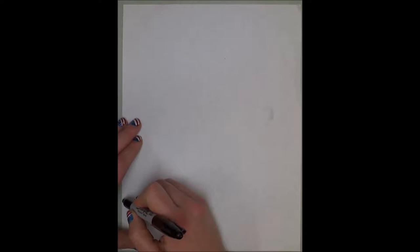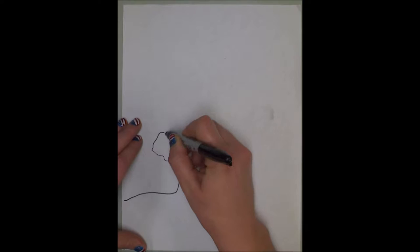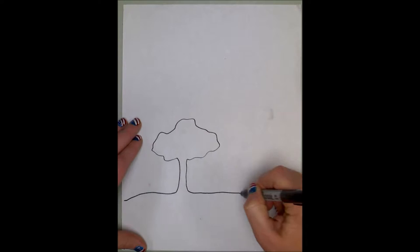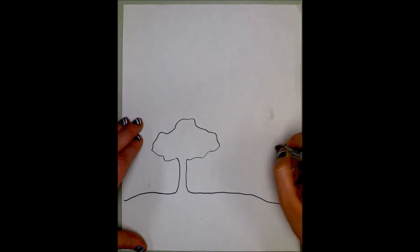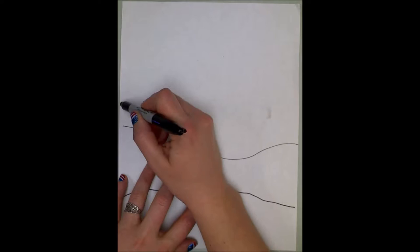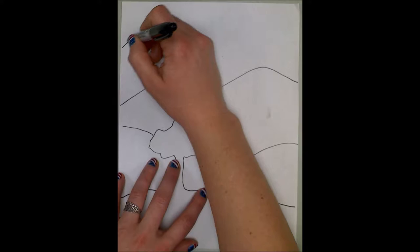So let's do a hill. I'm going to put the silhouette of a tree on this hill, and behind that we're going to do another layer. Let's do some gently sloping hills. Behind that, maybe a little more mountainous, and behind that let's put some pretty steep, jagged mountains.